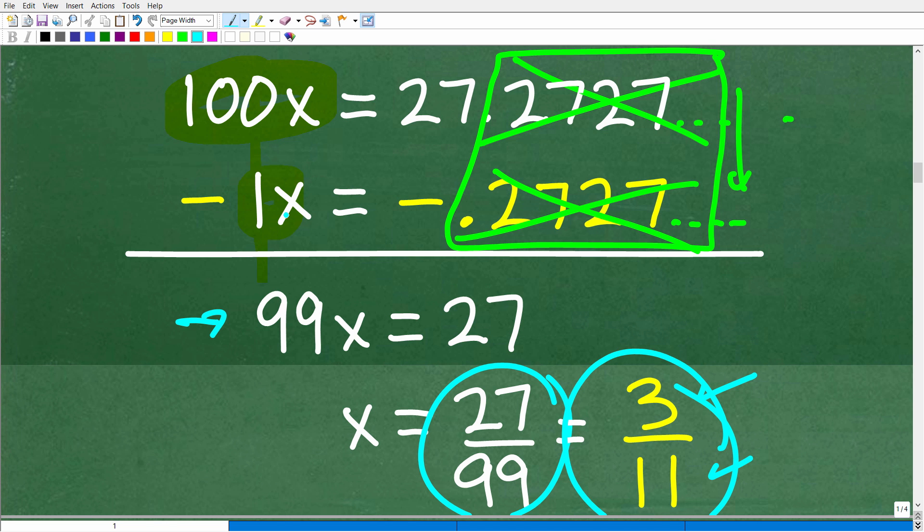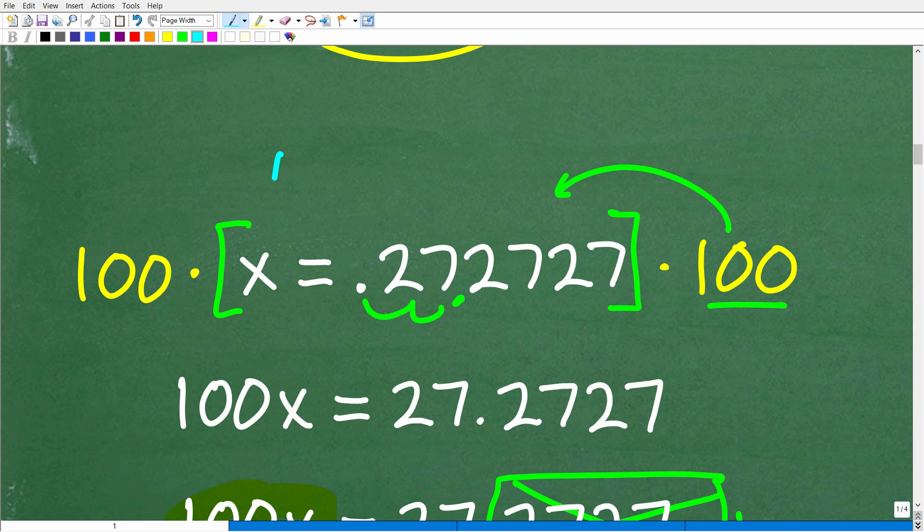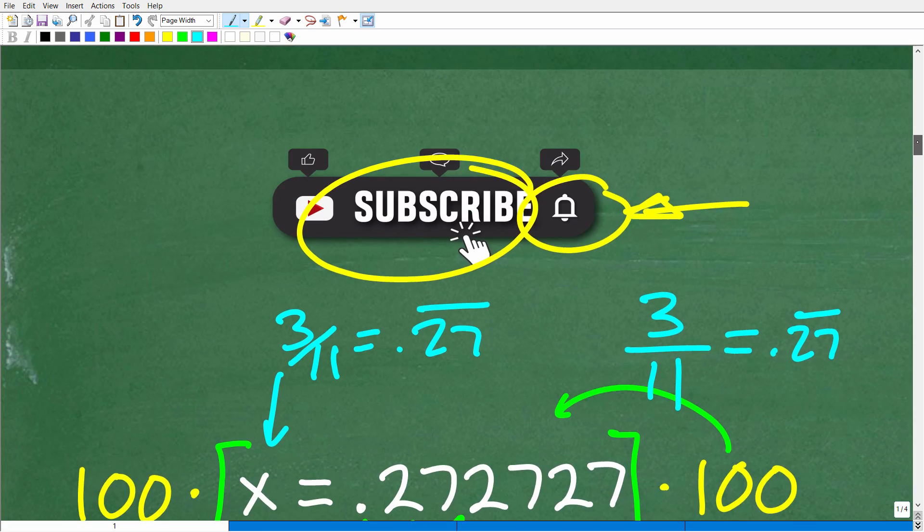Now here in our equation, x is equal to 3 over 11. So x is 3 over 11, which is equal to 0.27 repeating. Now if you don't believe me, go into your calculator. As a matter of fact, you should do this. Take 3 and divide it by 11, and you will see all these lovely 27s repeat.